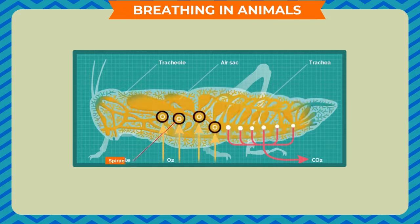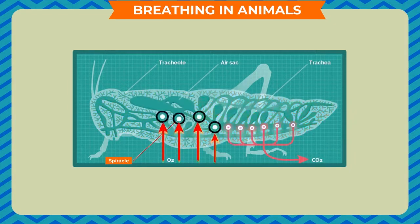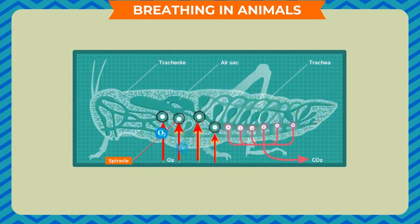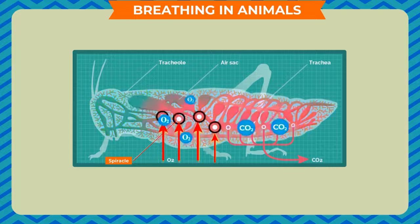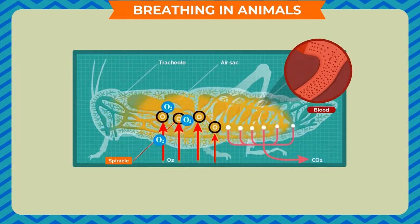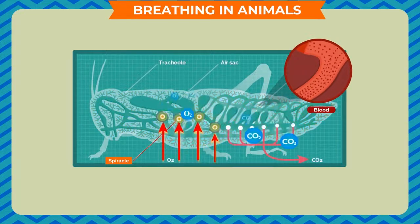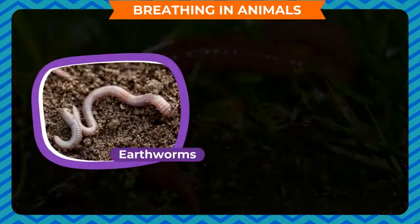Insects have tiny holes on their body to breathe, called spiracles. The spiracles are connected to air tubes that form a network in the body. These tubes carry air directly to the cells where the exchange of oxygen and carbon dioxide takes place. This is because the blood of insects does not contain hemoglobin to carry oxygen to all body parts.